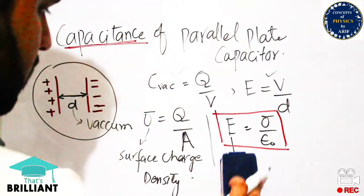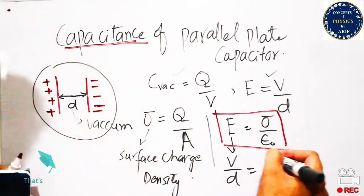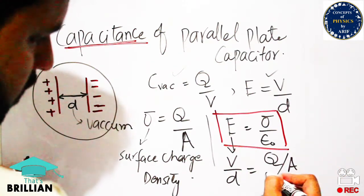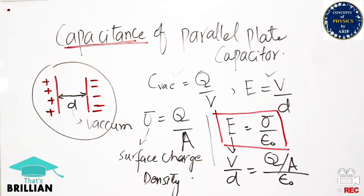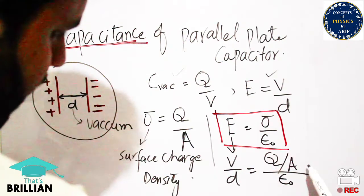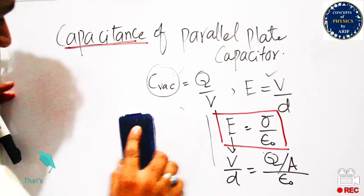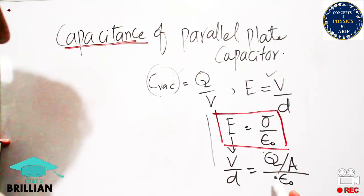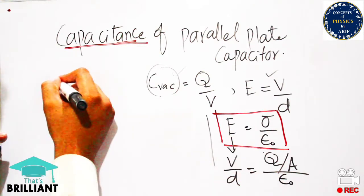The surface charge density σ can be replaced by charge per unit area Q/A. So the expression becomes Q/A divided by ε₀. Our focus is to express this in the form Q/V in order to find the capacitance for the vacuum case.